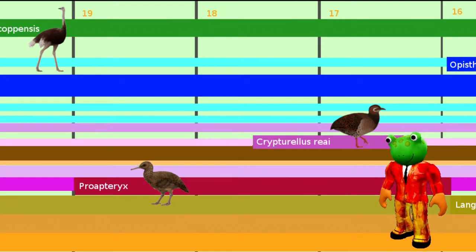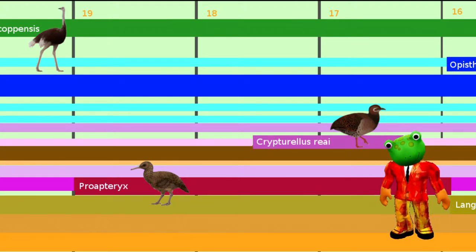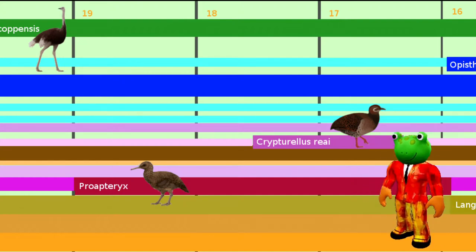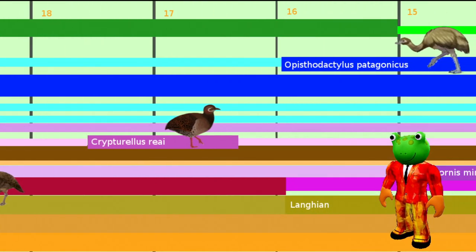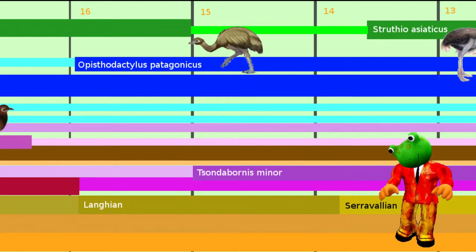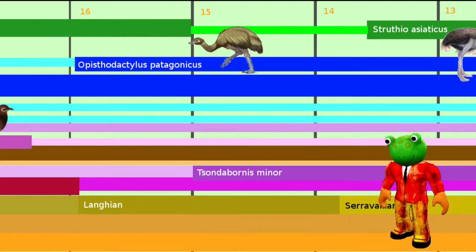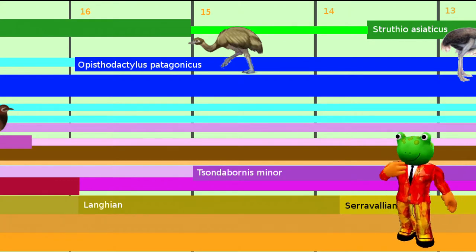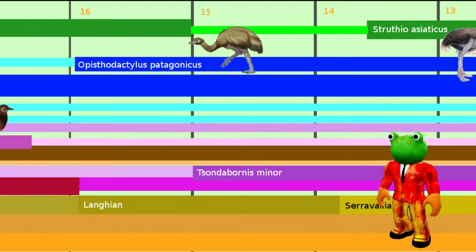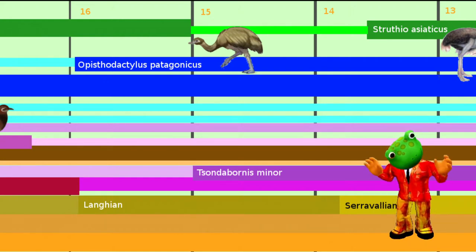17.5 million years ago, the first representative of a recent Tinamu species lived in Argentina. The Tinamus are small, nocturnal birds with moderate flying abilities. 1.5 million years later, the first representative of the rheicid lineage Opisthodactylus lived in southern Argentina — this genus survived until the early Pliocene. About 15 million years ago lived the first known fossil possible relative of the elephant birds, Psammornis in Namibia. At the same time there are many traces of ratite eggs; the birds not fossilized themselves are known as Diamantornis and Namernis.